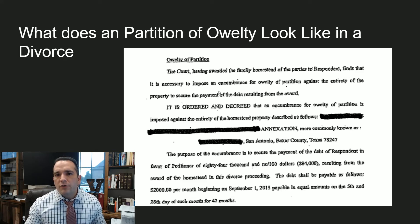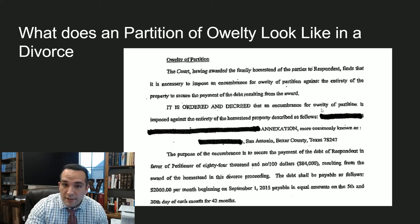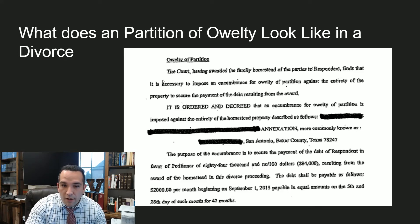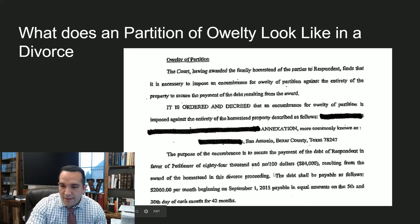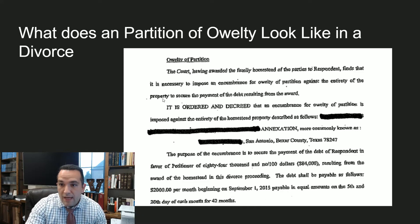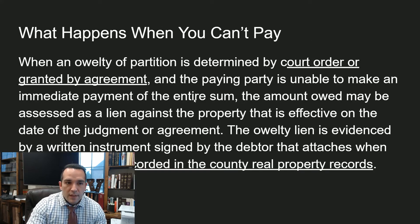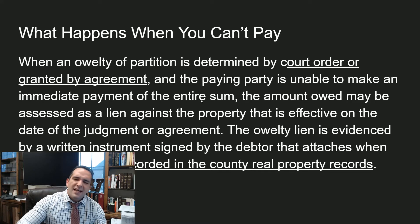So what does a partition oylty lien actually look like? This is what it looks like in a divorce decree — the judge is awarding partition of the property and it's annexed into a certain amount that needs to be paid every month starting on a certain date. If this payment is not made, we'll talk about what can happen. This is especially important in the state of Texas.